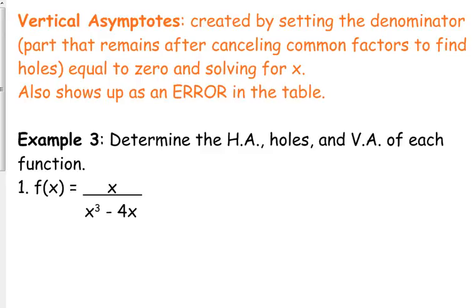These also show up as an error in your table, so you can't just automatically type these into y equals and look at the table and by the error determine what's a hole and what's a vertical asymptote because they both show up as errors, so you've got to know which one's which, where they come from. So let's look at another example here.